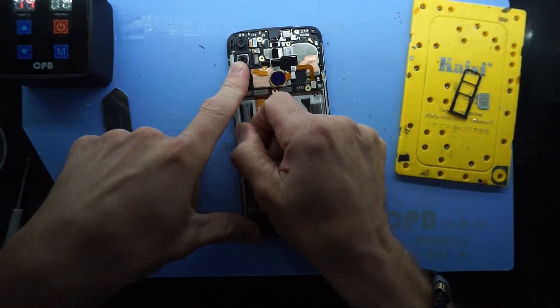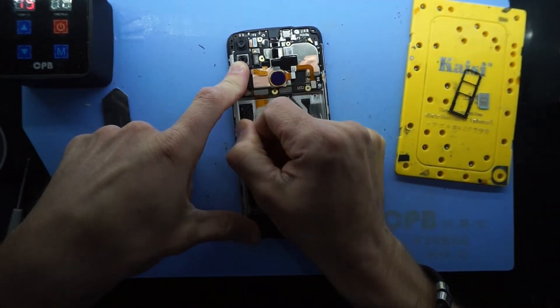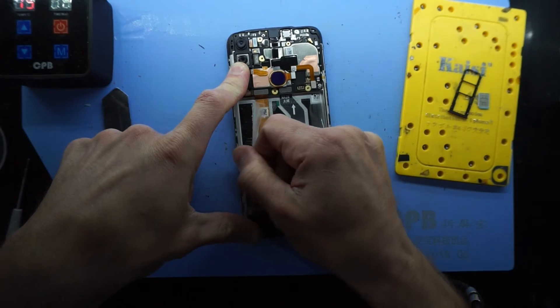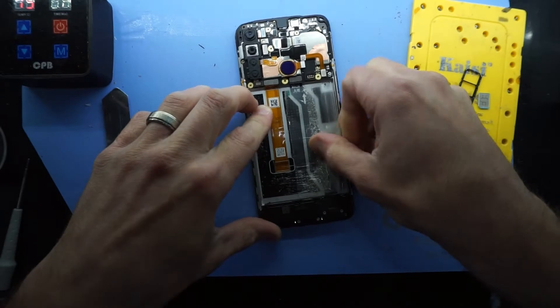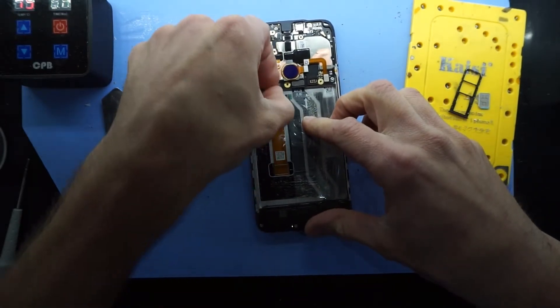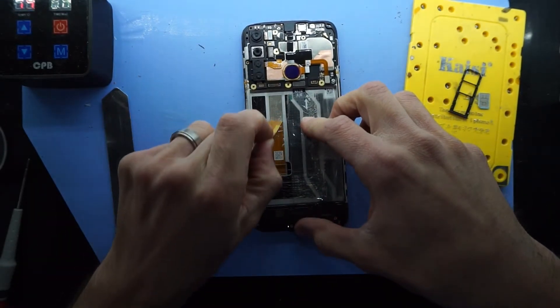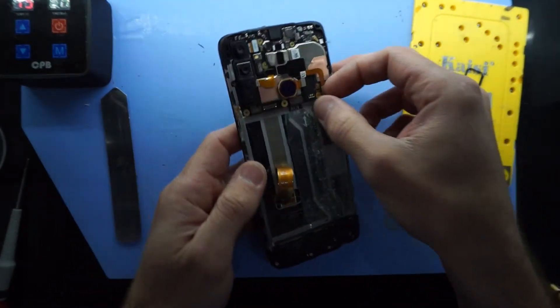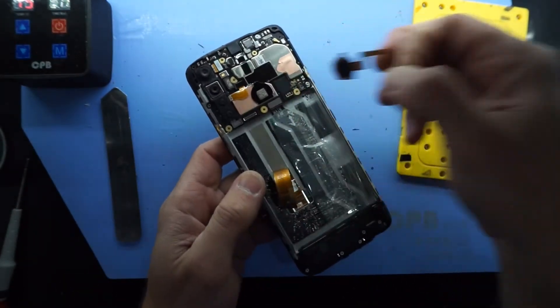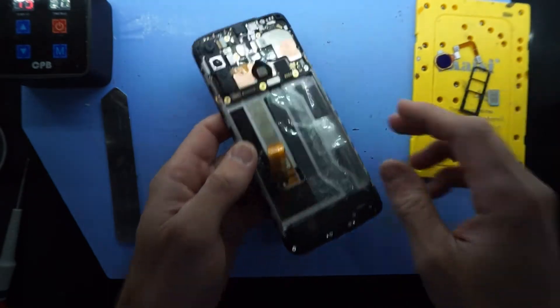Now I need to pull this off to the side and disconnect. And what I'm probably going to do as well is remove this home fingerprint scanner and put that off to the side.